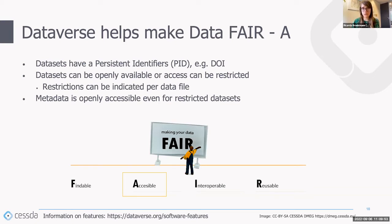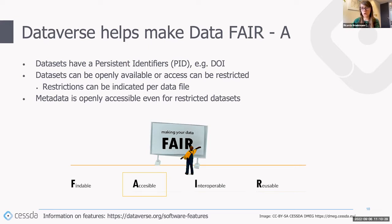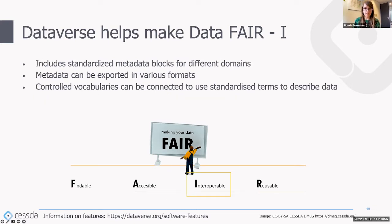Metadata is always openly accessible even for restricted datasets, and metadata can be exported and searched — this also helps with accessibility. Looking at Interoperability: Dataverse has standardized metadata blocks for different domains. If data is described in a standardized way, that helps with interoperability — getting metadata into a common catalog. Metadata can be exported in various formats, which again helps make metadata interoperable. Interoperability here is mainly at the metadata level, as the data level is more difficult — something the FAIR movement is still working on.